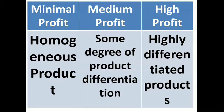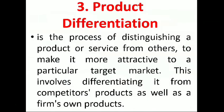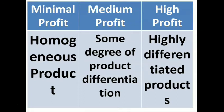In medium profit, there are some degrees of product differentiation. For example, in Procter & Gamble or Unilever products such as Cream Silk, Sunsilk, Dove, and Palmolive — these are all shampoos, however they have different qualities, different packaging, and different textures. Even though they have these variations, they are under the same company, giving consumers different choices or alternatives to pick in the market.